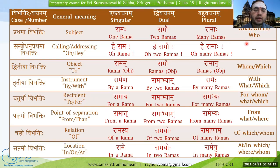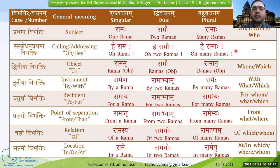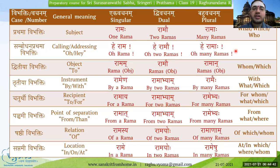One more thing which I also clarified in the doubt clarification session last Saturday: in general, if we are not sure of the linga, when asking a general question, most of the time we will use the Napomsakalinga form. But if we know it is an animate object or a human being, we use the Pullinga form, like Kaha pathayati — 'who is teaching?' The answer could be Shiksha. In general, we can ask questions in Pullinga form or Napomsakalinga form.